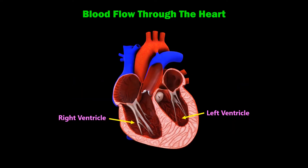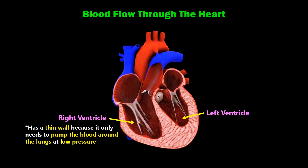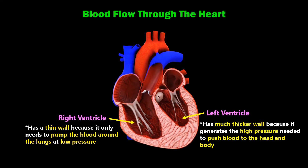The right ventricle has a thin wall because it only needs to pump the blood around the lungs at low pressure. The left ventricle has a much thicker wall because it generates the high pressure needed to push blood to the head and body.